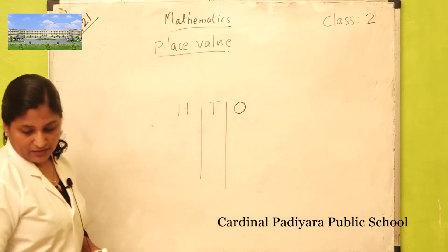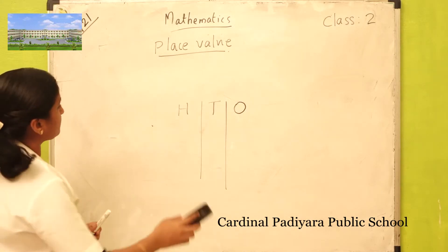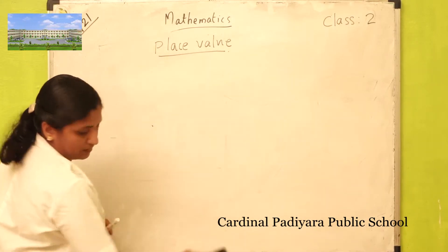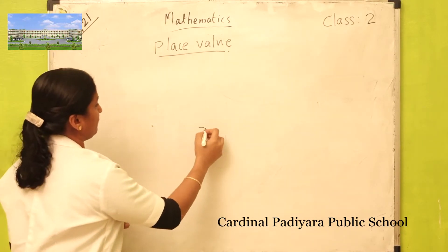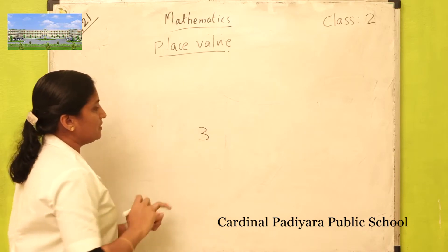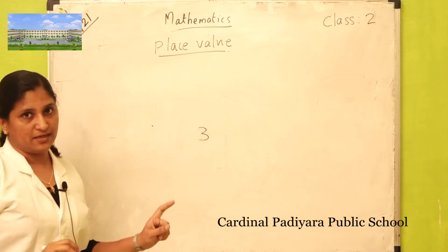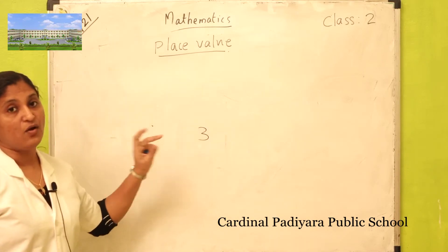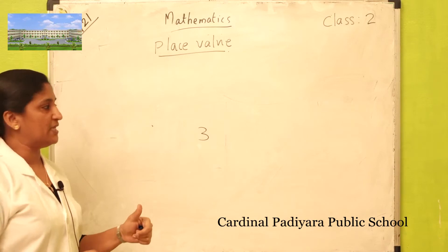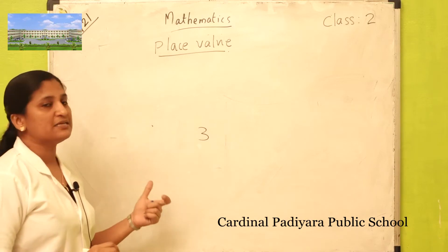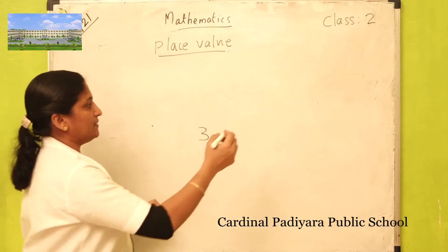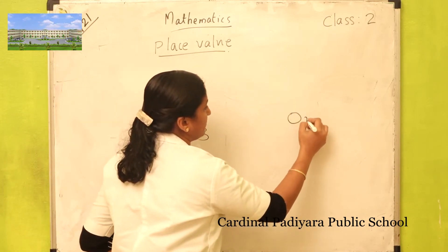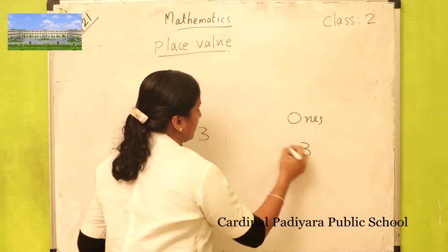Look at this number — number three. This number stands alone, so this number is in ones place. When the number stands alone, that number is in ones place.